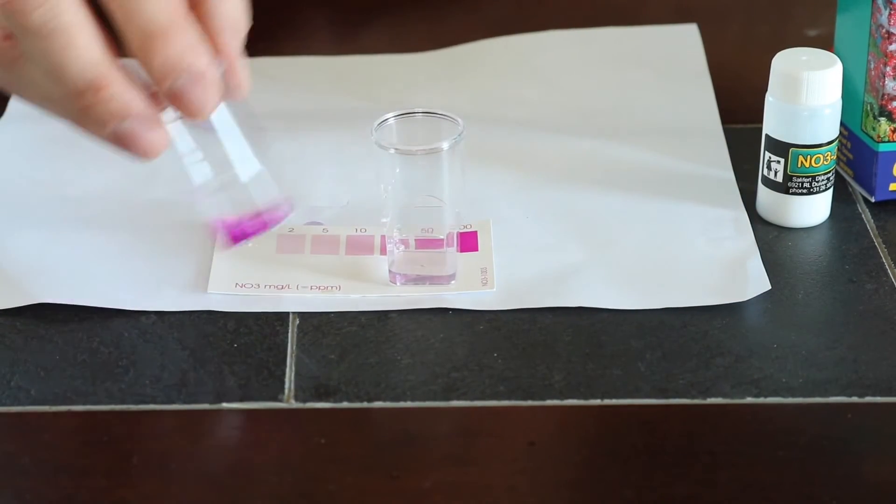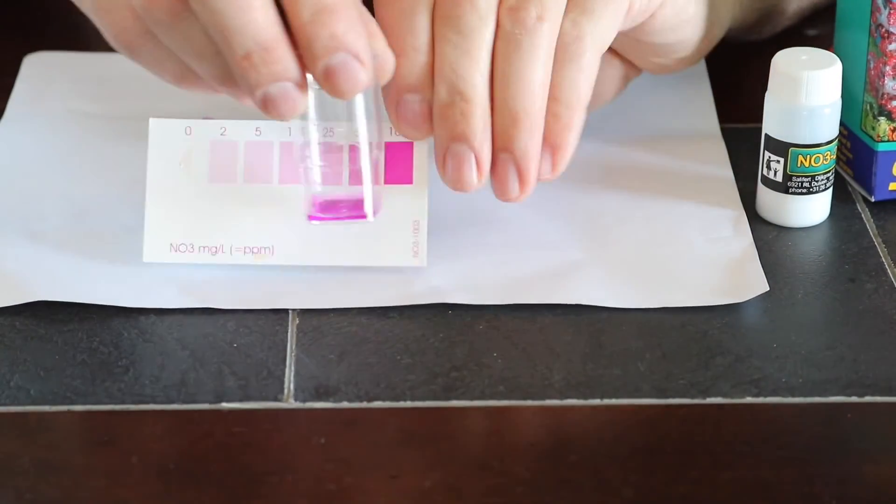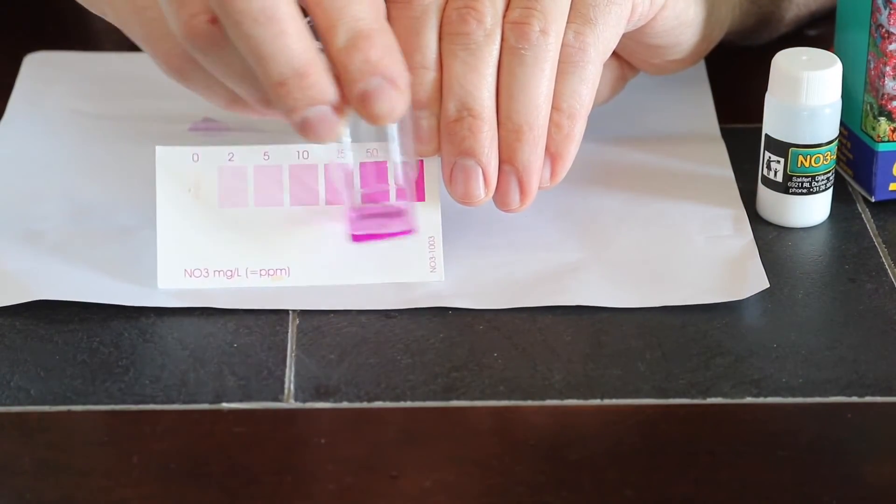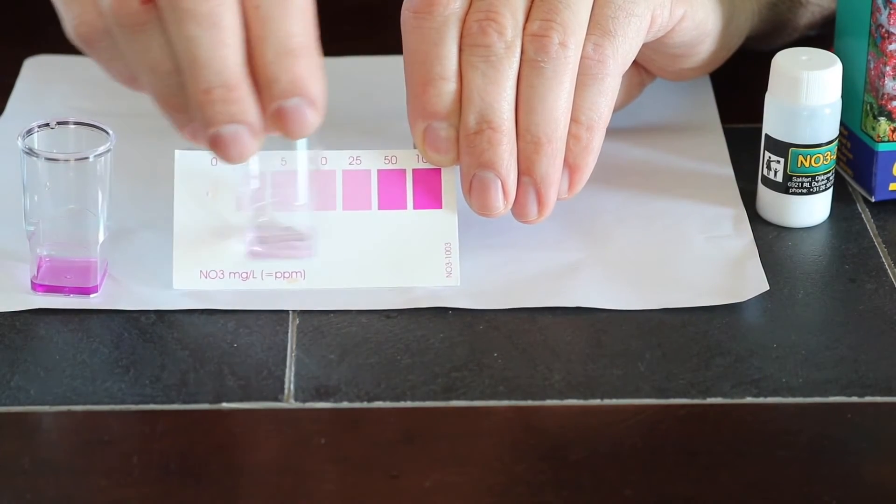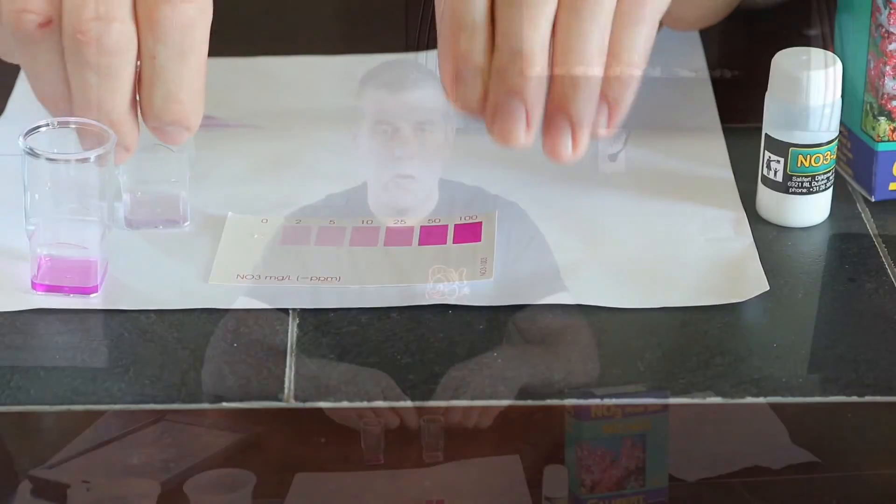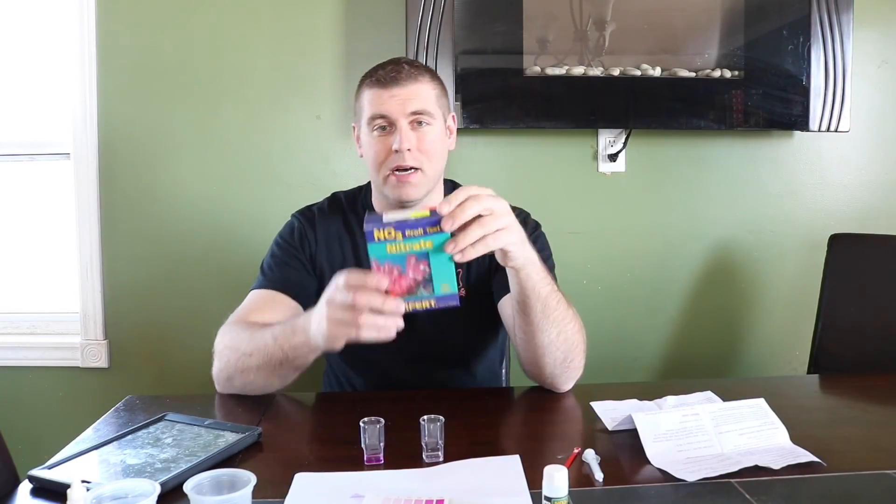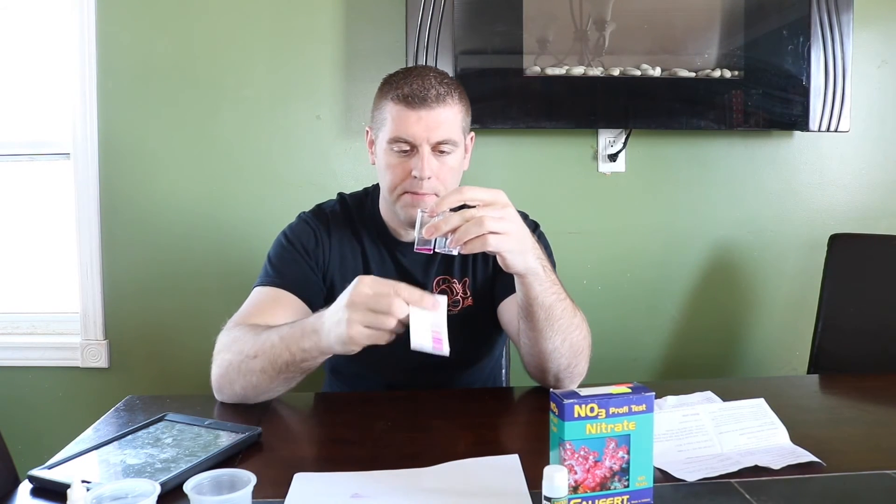And this one, look at that one. You guys can judge that sample. And then this sample. So that's how you test the NO3 nitrate from Salifert. So this is what you see guys. The one on the right, it looks like you want to do a water change ASAP. And the one on the left is looking great. So you just take it and you look at your little chart and you guys can be the judge. So this is how you mix this up. It's so easy to do.